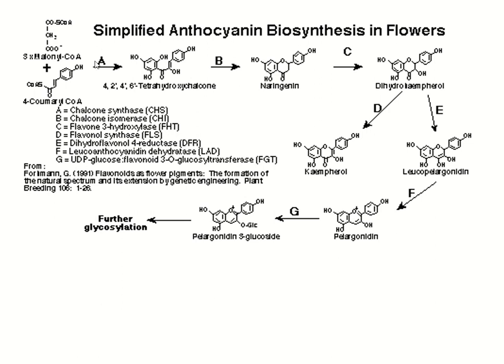Pelargonidine, malvidin, delphinidin, petunidin — how are they formed? The first step uses the precursors: three malonyl-CoA and 4-coumaroyl-CoA. Both attach and form one compound called 4,2,4,6-tetrahydroxychalcone. The enzyme responsible is chalcone synthase, which forms 4,2,4,6-tetrahydroxychalcone from three units of malonyl-CoA and one unit of 4-coumaroyl-CoA.